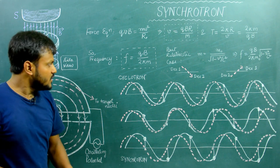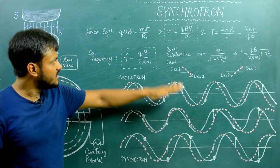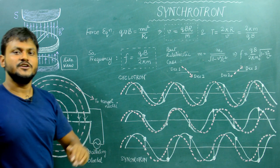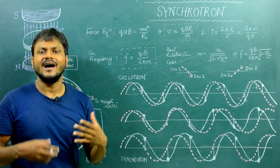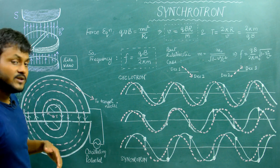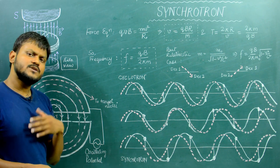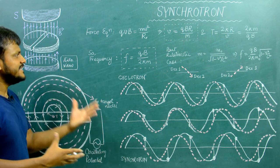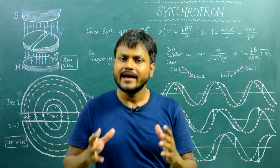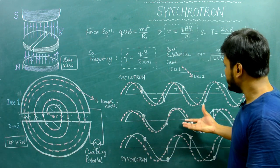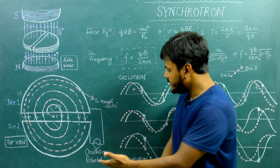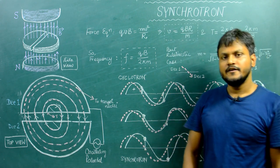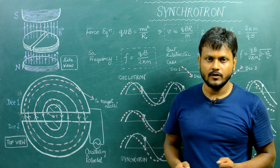Where the cyclotron fails at relativistic speeds, the synchrotron takes over by modulating either the oscillating potential frequency or the magnetic field to keep both waves in phase. This allows the synchrotron to accelerate charged particles to even greater velocities and very high energies. Such highly energetic charged particles can then be used to bombard a target nucleus to perform nuclear experiments. That's the general idea of a cyclotron and a synchrotron — the cyclotron fails at relativistic speeds, but the synchrotron takes over through modulation.